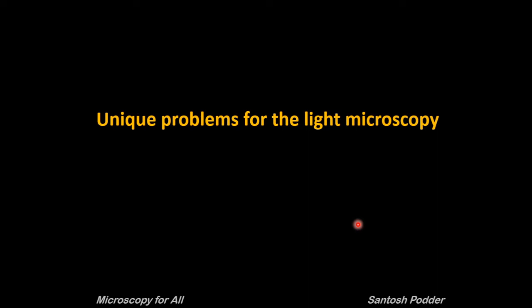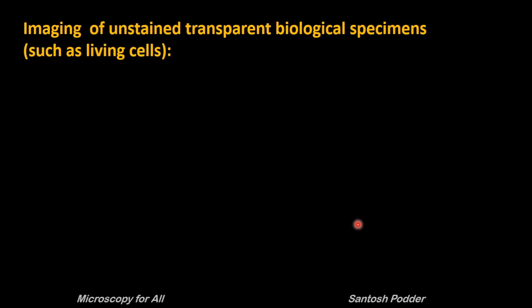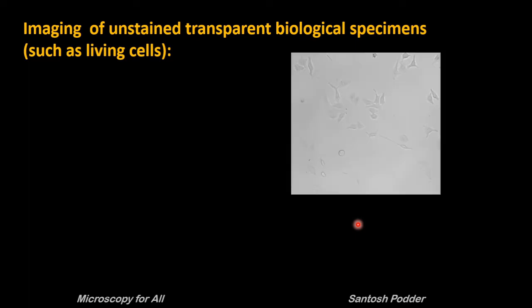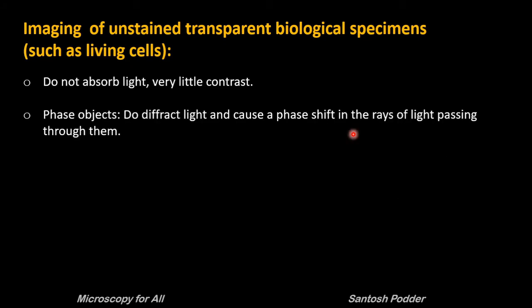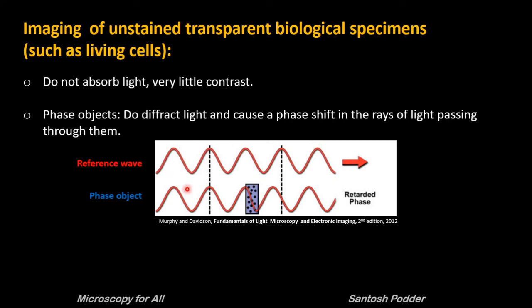Biologists face a unique problem while imaging unstained transparent biological specimens such as living cells in bright field microscopes. These objects do not absorb light like colored samples which we can easily see in bright field microscopes. As a result these objects have very little contrast. However, these objects do diffract light and cause a phase shift in the rays of light passing through them.